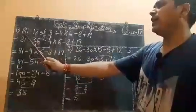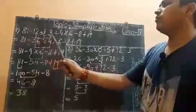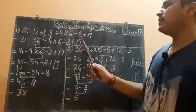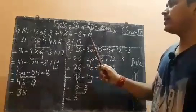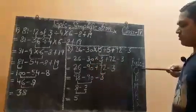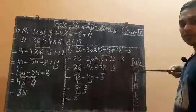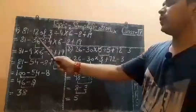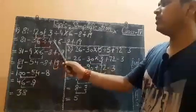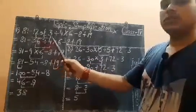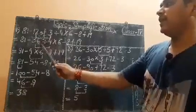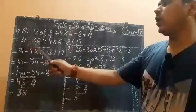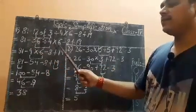This is our first question: 81 minus 12 of 3 divided by 4 multiply by 6 minus 8 plus 19. As I told you, first you will solve 'of'. Now where is 'of' given in the question? It is 12 of 3. So first you will solve this part: 12 multiply by 3, which will be 36.